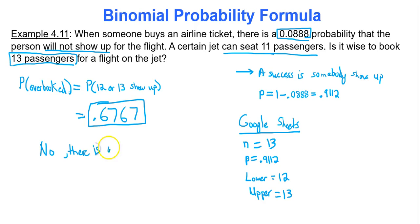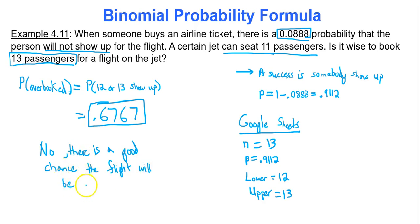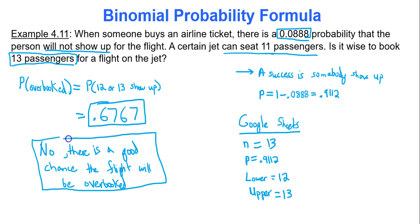There is a good chance the flight will be overbooked, meaning someone's going to be standing or someone's going to have to stay behind, and that never ends well. They asked: is it wise to book 13 passengers? I calculated the probability that the flight would be overbooked — meaning if 12 or 13 passengers show up — and I got a relatively high probability of about 67.5%.